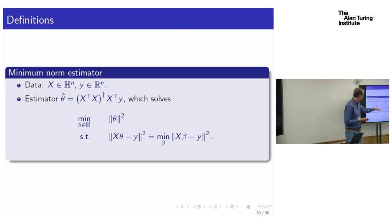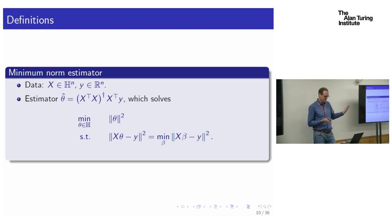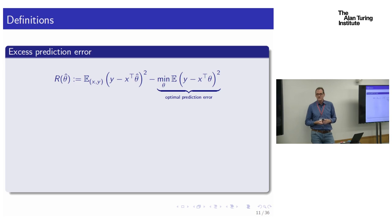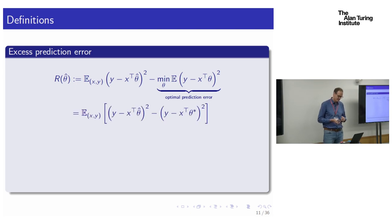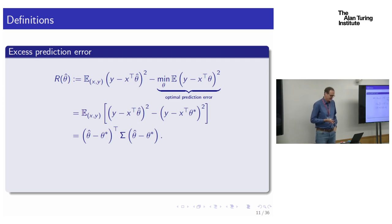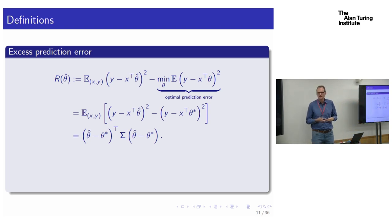We're interested in how well we predict, and our figure of merit is the excess prediction error — the expected squared difference between our prediction with theta-hat and the actual outcome, minus the same thing with the optimal theta-star. That second term is sigma-squared. The excess prediction error is just a quadratic form in theta-hat minus theta-star — how far our estimate is from the optimal parameter. The covariance sigma tells us which directions matter: we better get the lambda_1 direction right, or we'll get a big contribution to error.